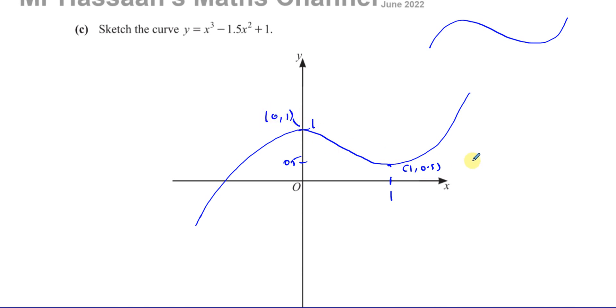We know that it has this type of shape up and up because it's got a positive x-cubed. We know it passes through 1 on the y-axis. And we know that 0, 1 is also the turning point. And it also turns at 1, 0.5. And it continues going up forever.